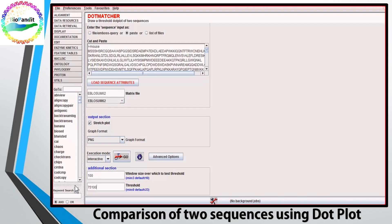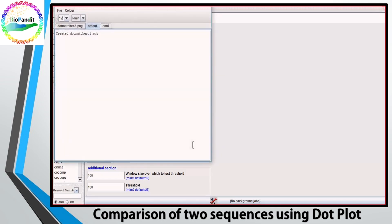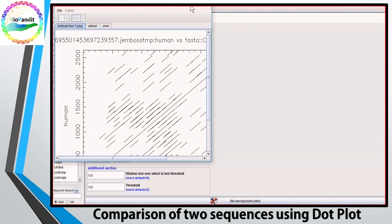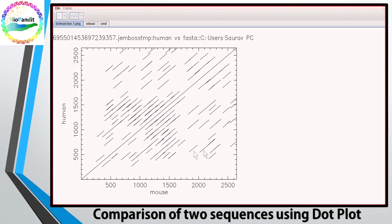And if you elevate the identity threshold to 100%, the noise reduces even more. And you will still see a high degree of sequence similarity.